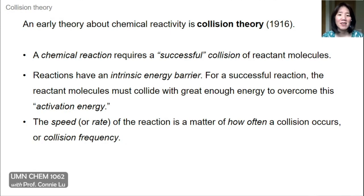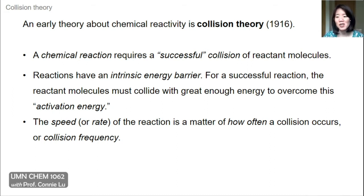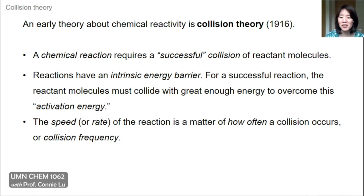An early theory about chemical reactivity was called collision theory, and this was developed as early as 1916. In collision theory, a chemical reaction is really a successful collision of reactant molecules. All chemical reactions have an intrinsic energy barrier, and for a reaction to be successful, the reactant molecules must collide with a great enough energy to overcome this intrinsic barrier — which we call the activation energy. The rate of the chemical reaction is a matter of how often a collision occurs, or collision frequency.